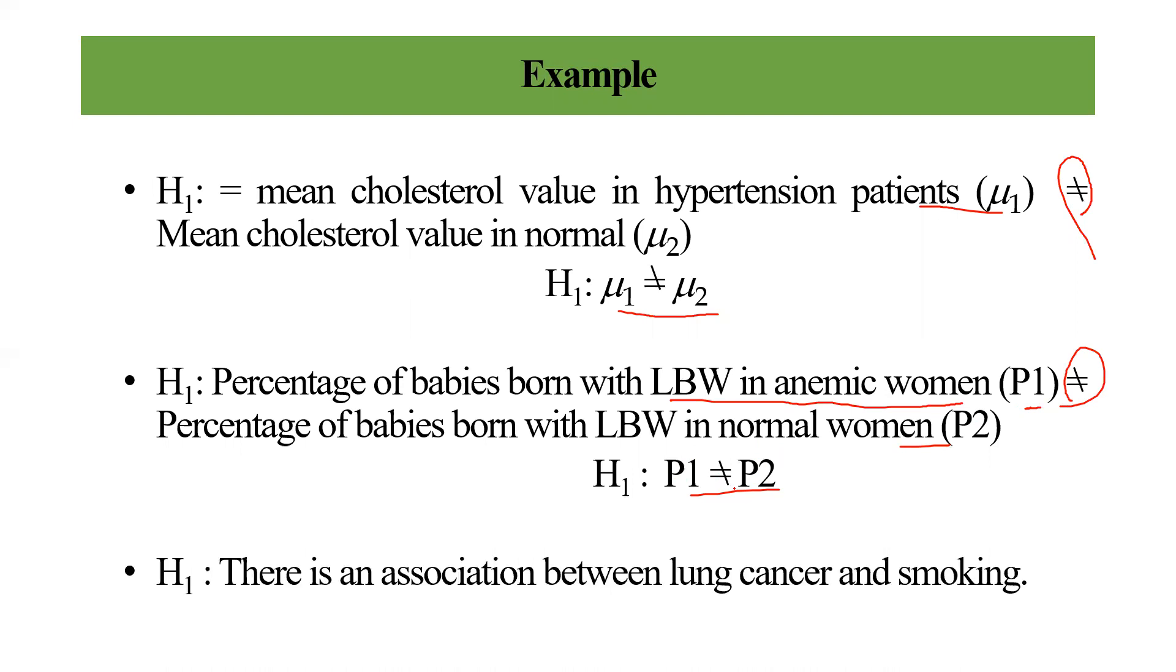For another example, we have the alternative hypothesis: there is an association between lung cancer and smoking. In that case, it is given an association, but it is not given whether it is positive or negative association. It may be positive association or negative association, there are both possibilities. That's why it is known as two-sided test. Thank you, everyone.